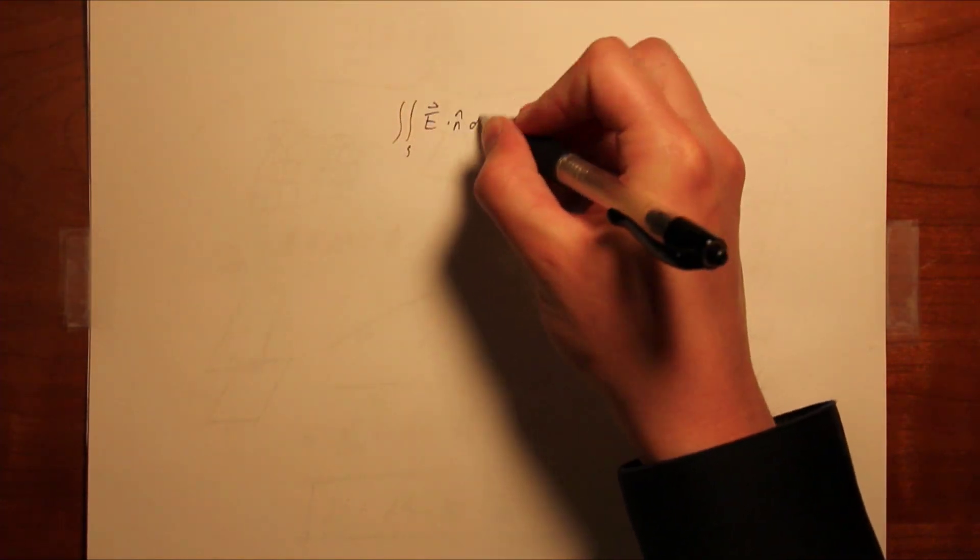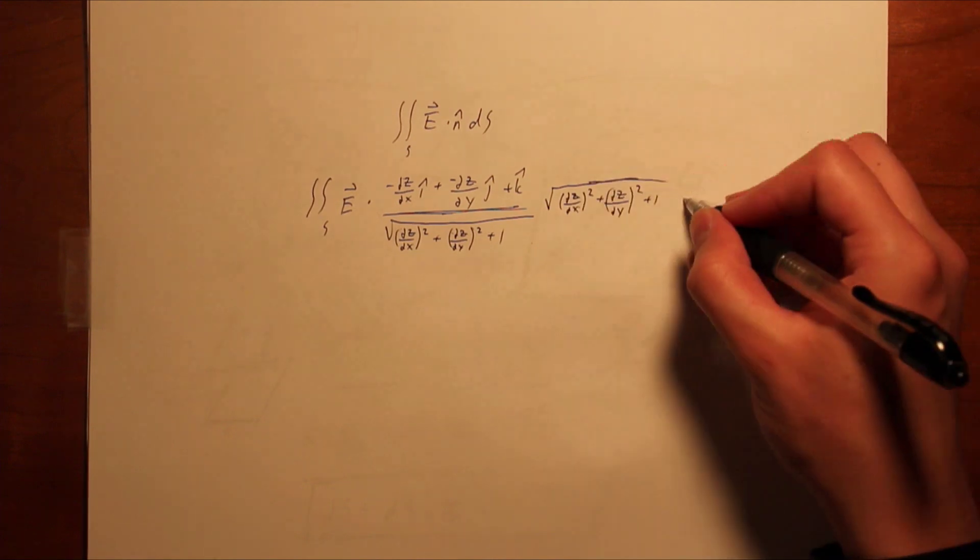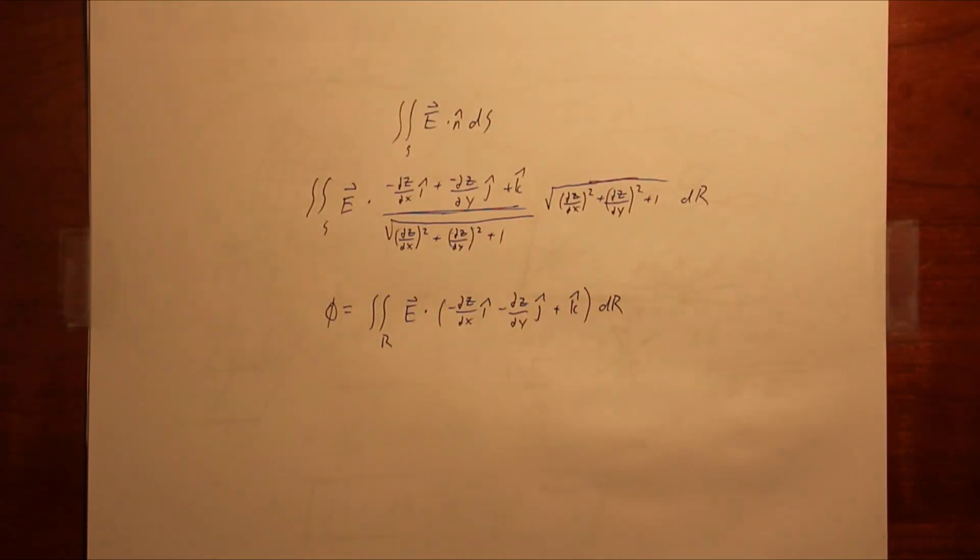Combining our two parts together, we find that some of the ugliness cancels out, and we have a means of taking a surface integral as a standard double integral over a projected region.